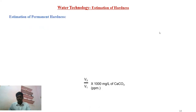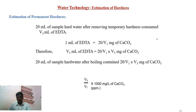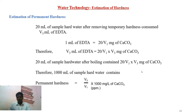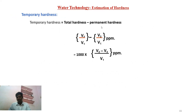Estimation of permanent hardness: 1 ml of EDTA equals 20/V1 mg of calcium carbonate. For V3 ml of EDTA used in the permanent hardness titration, for 20 ml of sample water, the permanent hardness equals (20/V1) × V3 mg of calcium carbonate. So permanent hardness equals V3/V1 × 1000 mg per litre of calcium carbonate. Finally, temporary hardness is calculated by subtracting permanent hardness from total hardness: temporary hardness equals (V2/V1 - V3/V1) × 1000 mg per litre.